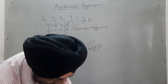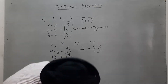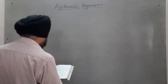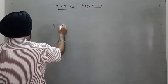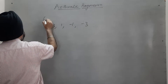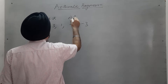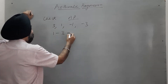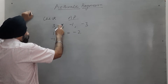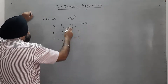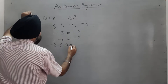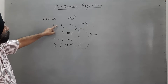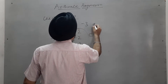Let's check whether the following numbers are in AP or not: 3, 1, minus 1, minus 3. Second term minus first term gives minus 2. Third term minus second term gives minus 2. Fourth term minus third term again gives minus 2. The common difference is constant throughout, so the numbers 3, 1, minus 1, minus 3 are in AP.